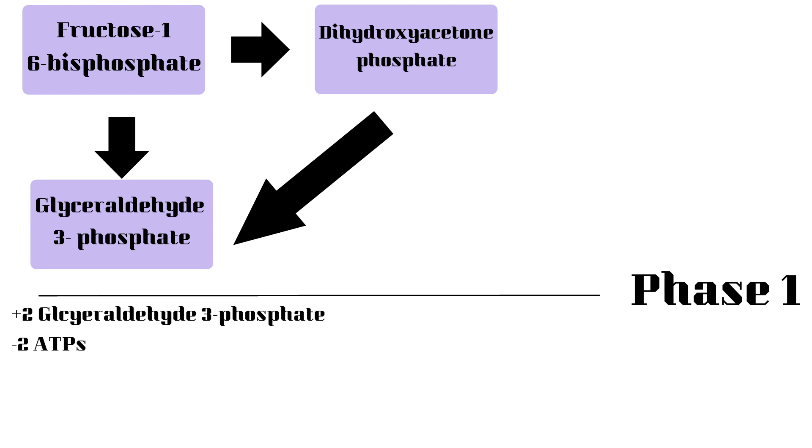This concludes the first phase of glycolysis. By the end of this phase, we have produced two glyceraldehyde-3-phosphate molecules and we have lost two ATPs.